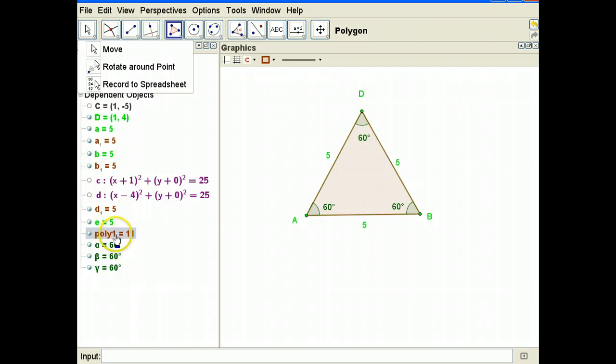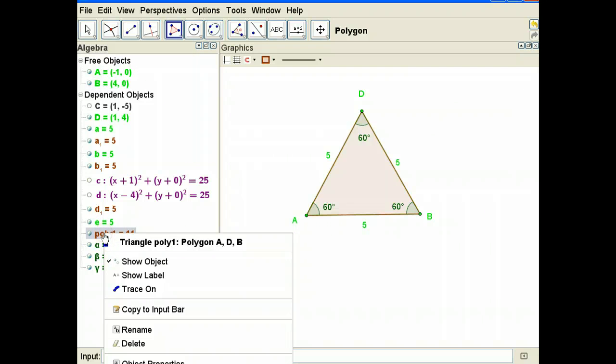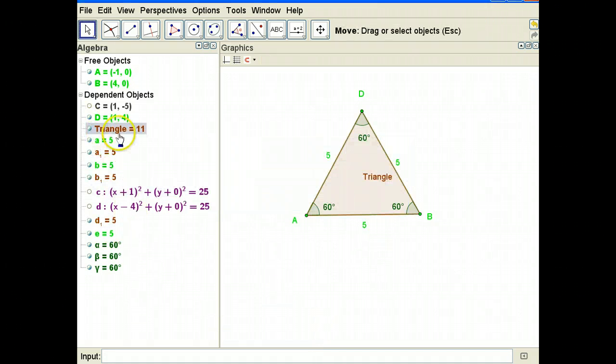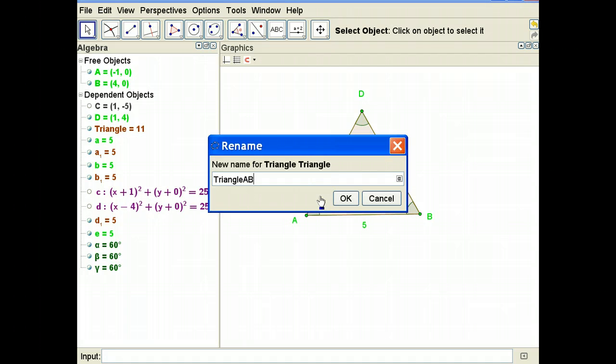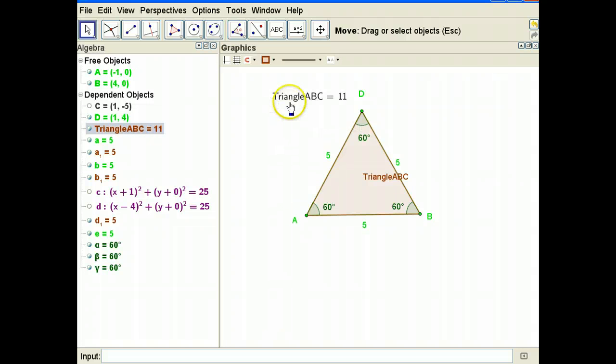Look here in the algebra window, it called it Poly 1. The 11 is the area of the triangle. It actually does the area for you automatically. I don't like the Poly 1 name, so let's change that name by going to the algebra window, right-clicking on that, and renaming it. Let's actually call it triangle ABC. You can't use spaces. So when you rename it, you can't use any spaces here, so ABC's got to go together. And you can actually drag that to the graphics window, and whatever's on that algebra window will be dragged over to the graphics window, which is very convenient.